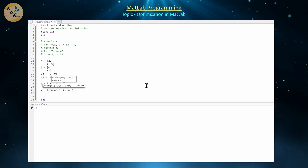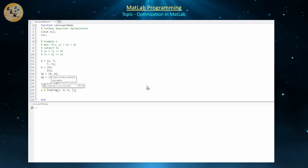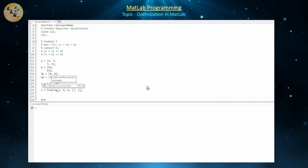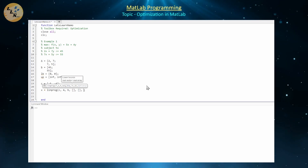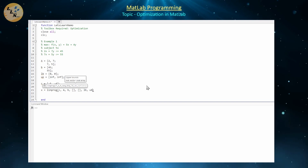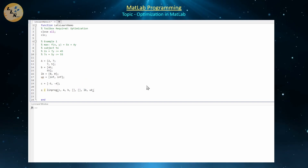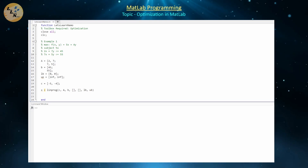Since we don't have equality constraints, we pass empty brackets for both Aeq and Beq. Then we supply the lower bound LB and upper bound UB for our variables. That's all we need to define for this particular scenario.